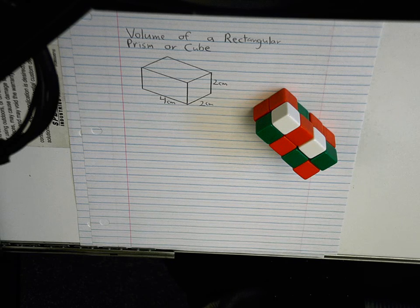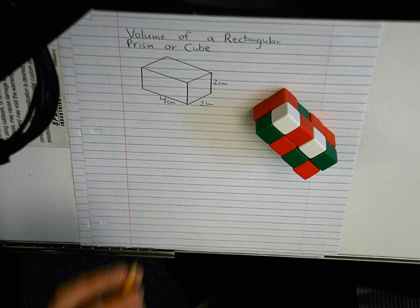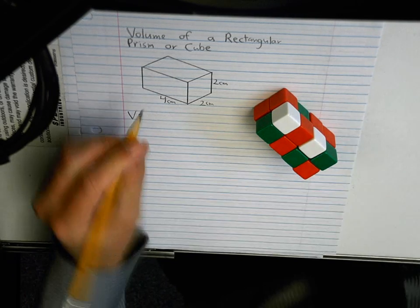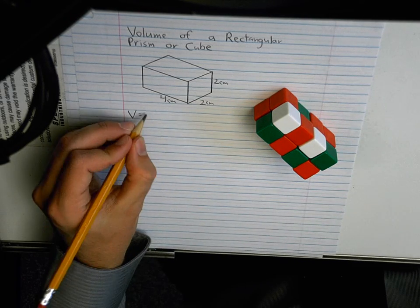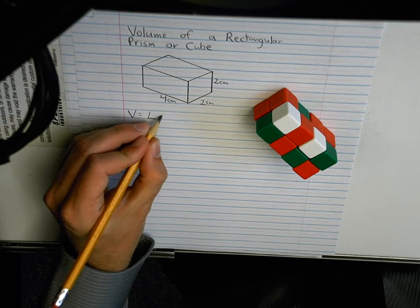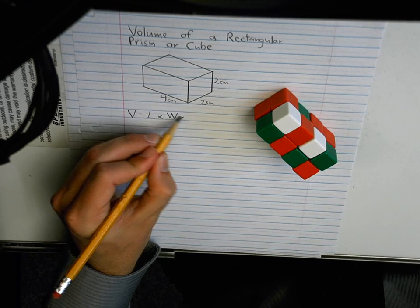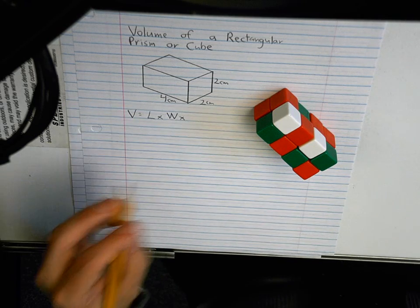So we have a formula. Remember, a formula is an equation, a way we can use numbers to figure something out. And ours is the volume of one of these rectangular prisms is length times width times height. How high it goes.